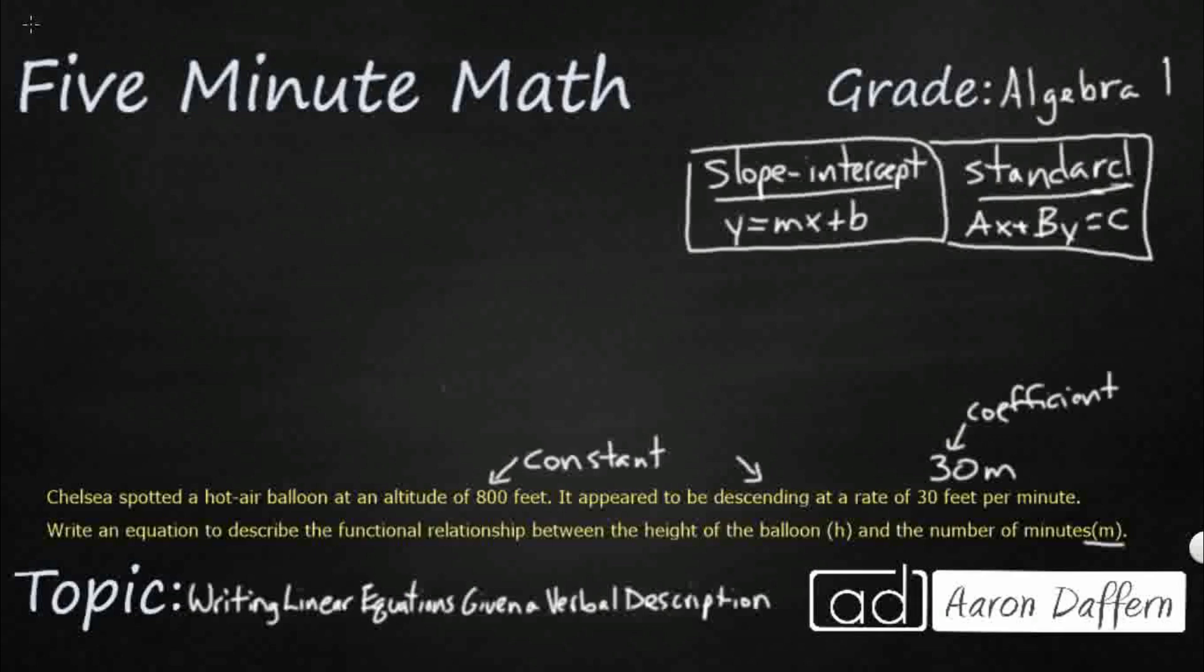Write an equation to describe the functional relationship between the height of the balloon h. So those are our two variables. So it looks like we're going to use the slope-intercept form because I see a constant that could be like a y-intercept. And I see it's descending at a rate of 30 feet per minute, which means it's going down. So we're going to look at the height and we're going to look at the number of minutes.